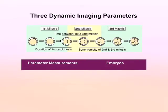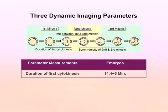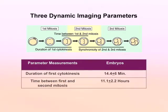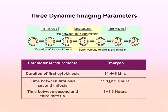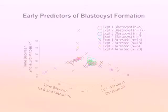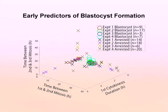The three imaging parameters were the duration of the first cytokinesis, the time between the first and second mitoses, and the synchronicity of the appearance of the third and fourth embryonic blastomeres.